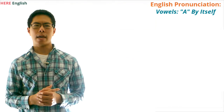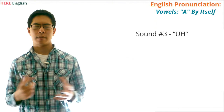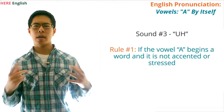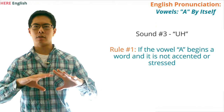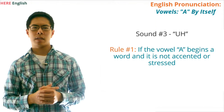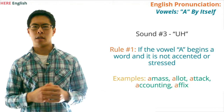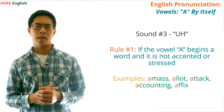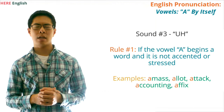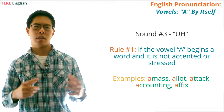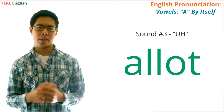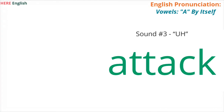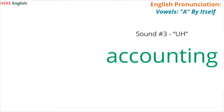Another sound that the vowel A can have in a word is the schwa sound (uh). Here are two rules for when the letter A will sound like a schwa. Rule number one: if the vowel A begins a word and it is not accented or stressed, it will have the schwa sound. Examples of words with this rule are amass, a lot, attack, accounting, and affix. Practice saying these words: amass, a lot, attack, accounting, affix.